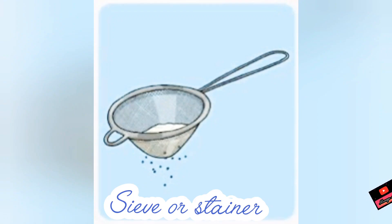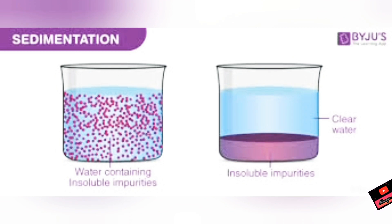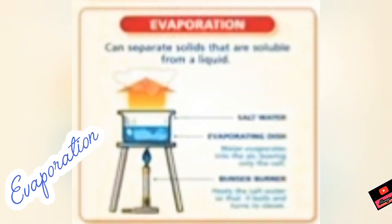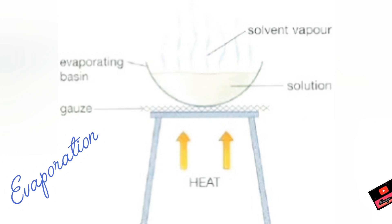by filter paper or a sieve/strainer. Sedimentation is the technique by which we separate heavier solutes from the mixture. In evaporation, we boil the mixture — the solvent evaporates and goes away as vapors, and we get the soluble solute separated.